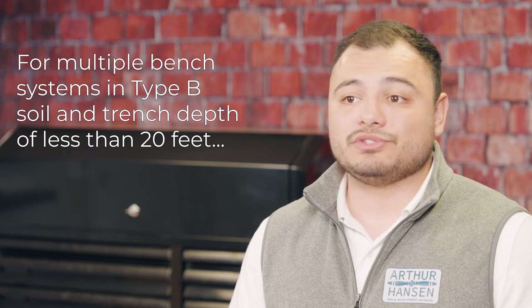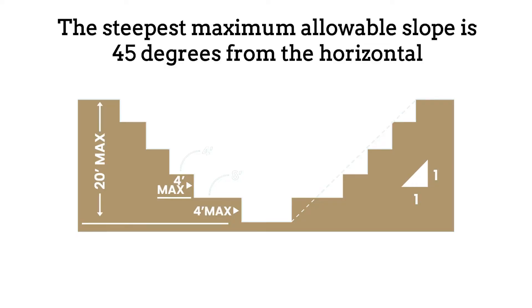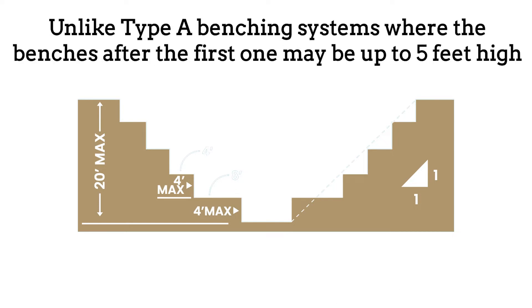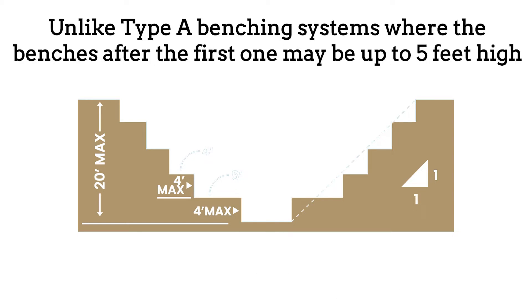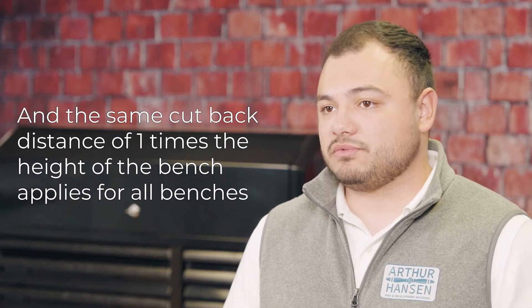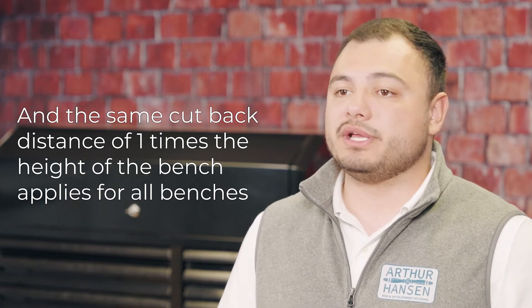For multiple bench systems in type B soil and trench depth of less than 20 feet, the steepest maximum allowable slope is 45 degrees from the horizontal, or one horizontal to one vertical incline. Unlike type A benching systems where the benches after the first one may be up to 5 feet high, all benches in type B system have a maximum height of 4 feet. And the same cutback distance of 1 times the height of the bench applies for all benches.